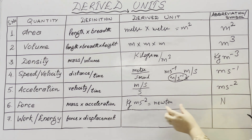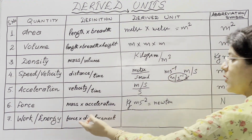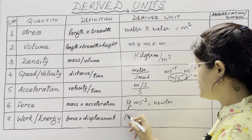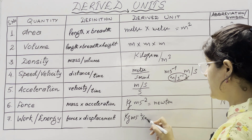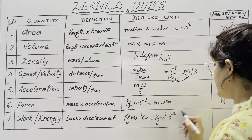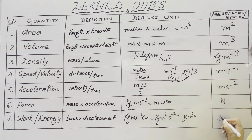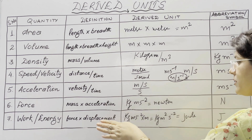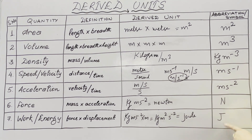The next physical quantity is work or energy. Its definition is force into displacement. The unit of force is kg m s⁻² and displacement is meter, so it means kg meter square per second square. It is written as joule, or you can write J. Work is said to be 1 joule when a force of 1 newton displaces a body through a distance of 1 meter in its own direction.